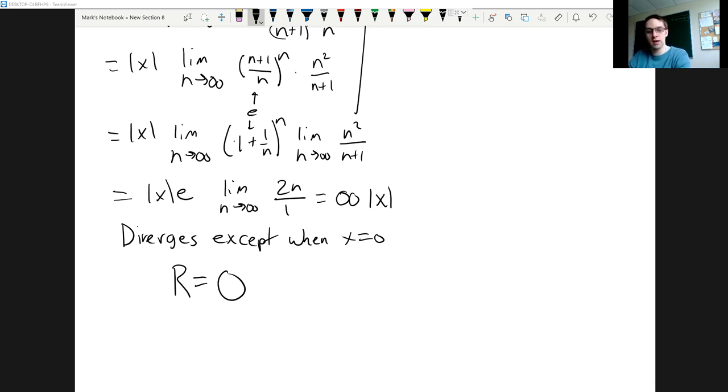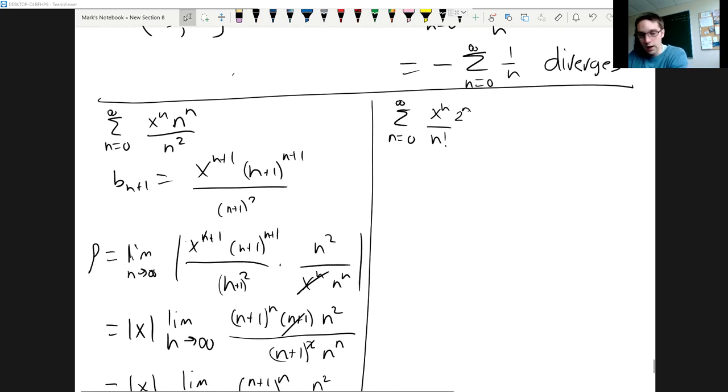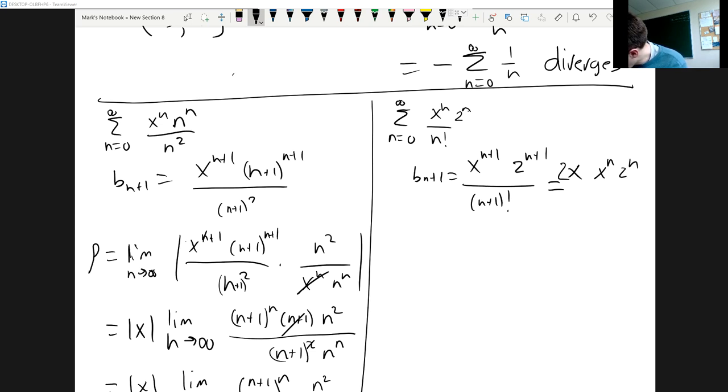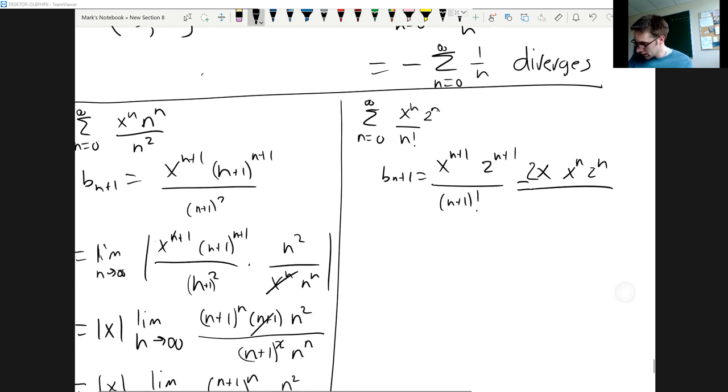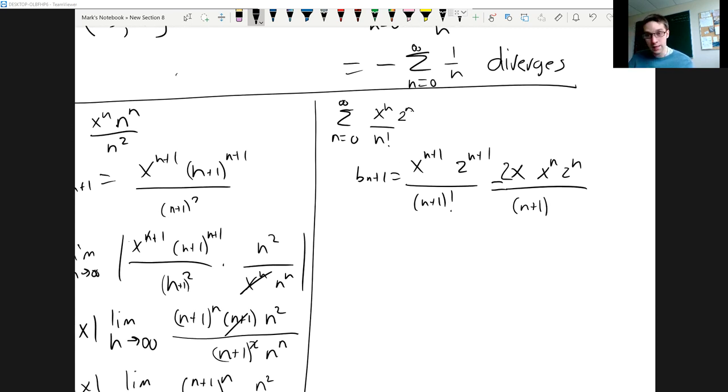All right, let's try our second problem. So here we've got x^n 2^n over n factorial, and so bn+1 would be equal to x^(n+1) 2^(n+1) over (n+1) factorial. And with factorial especially I like to simplify. So let's pull out first of all an x and a 2, and we'll have x^n 2^n left on top, and then from the bottom we have (n+1) factorial, but that's the same thing as (n+1) times n times (n-1) and so on, which is just n factorial.